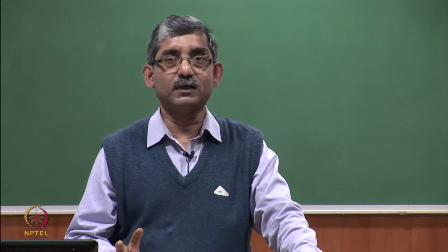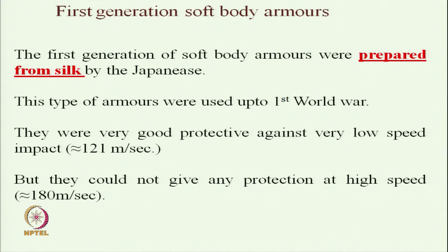How did soft body armours evolve? The first generation soft body armours were prepared from silk by Japanese people, used up to the First World War, with very good protection against low speed impacts around 121 meters per second. But once the projectile speed increased to around 180 meters per second they failed to give sufficient protection.